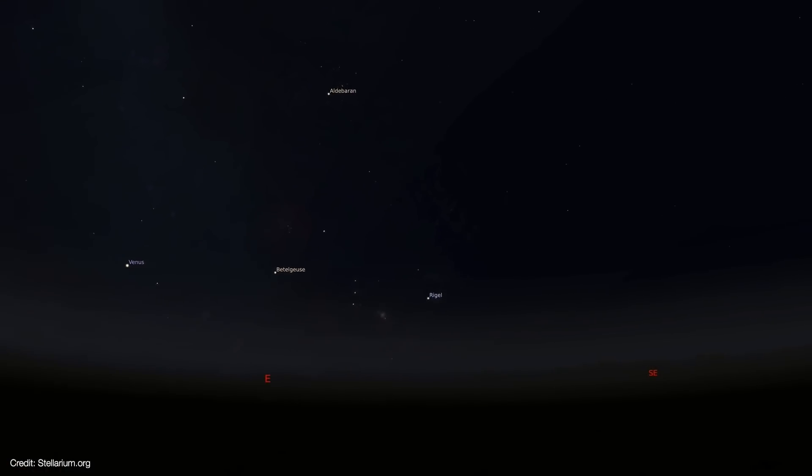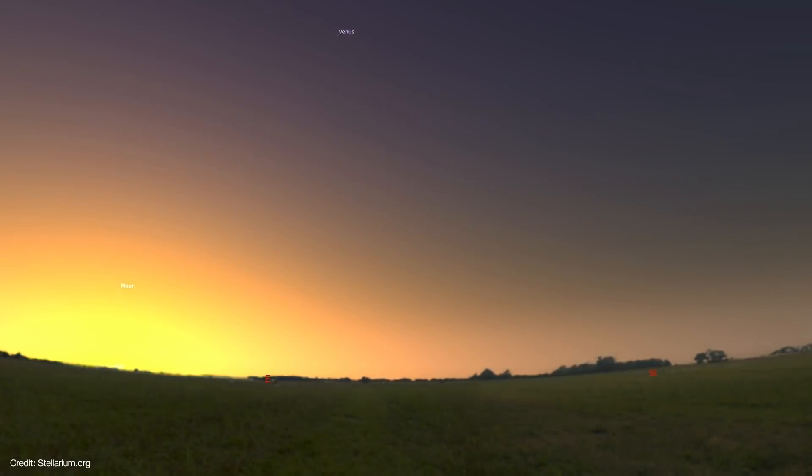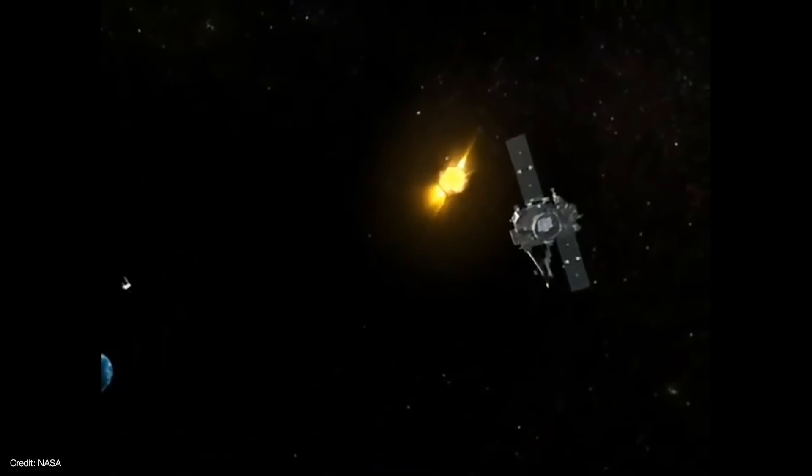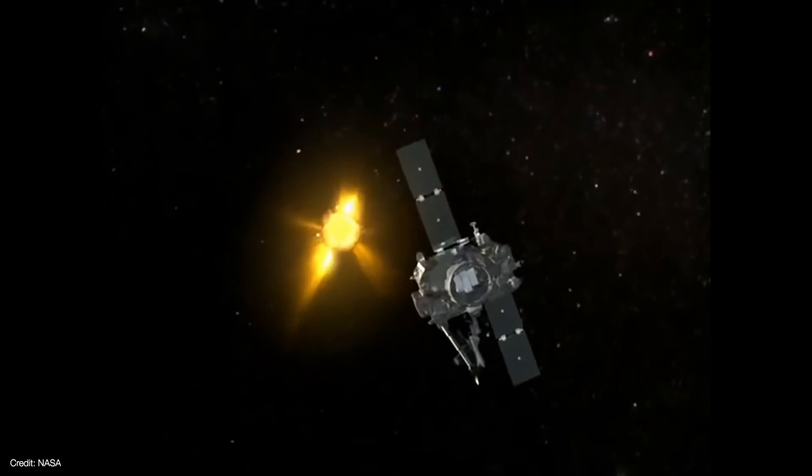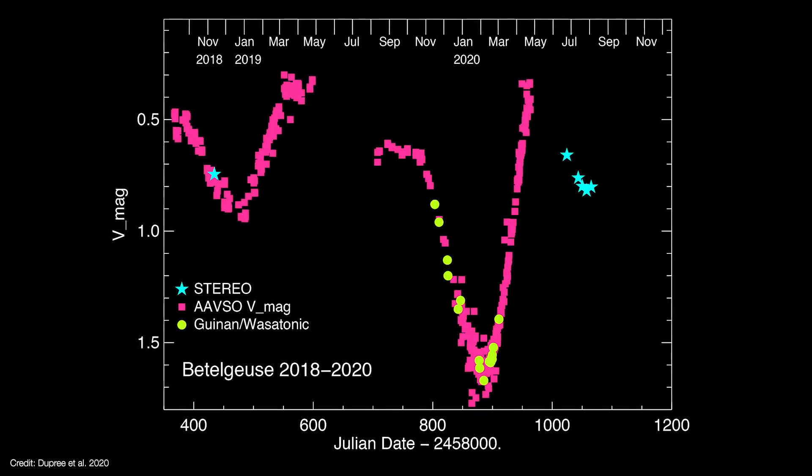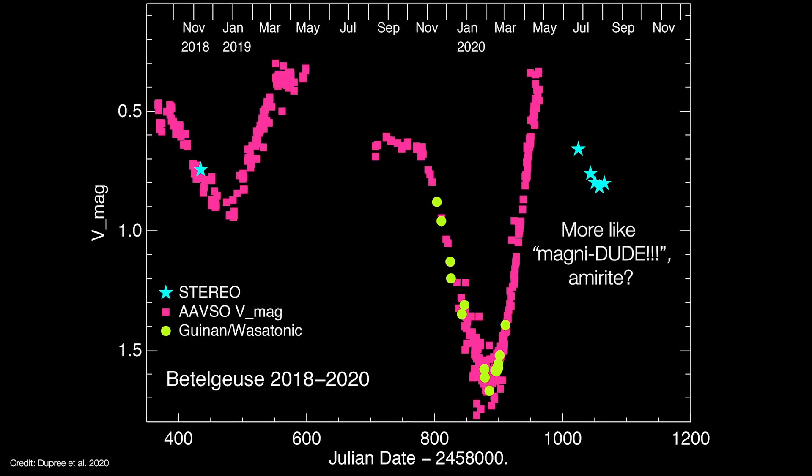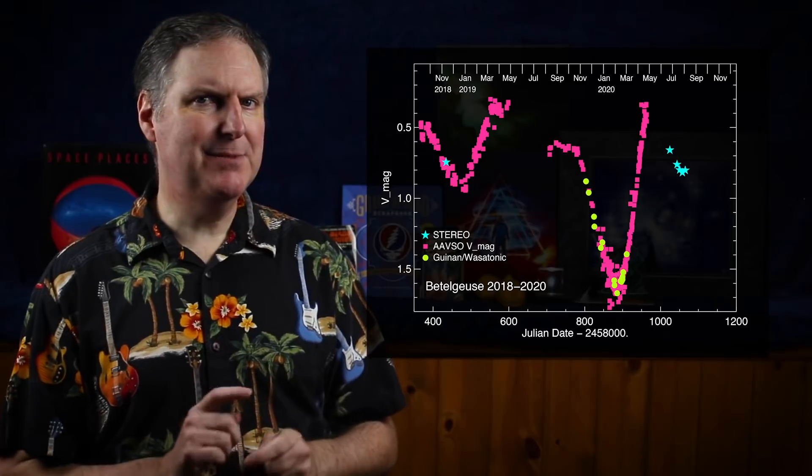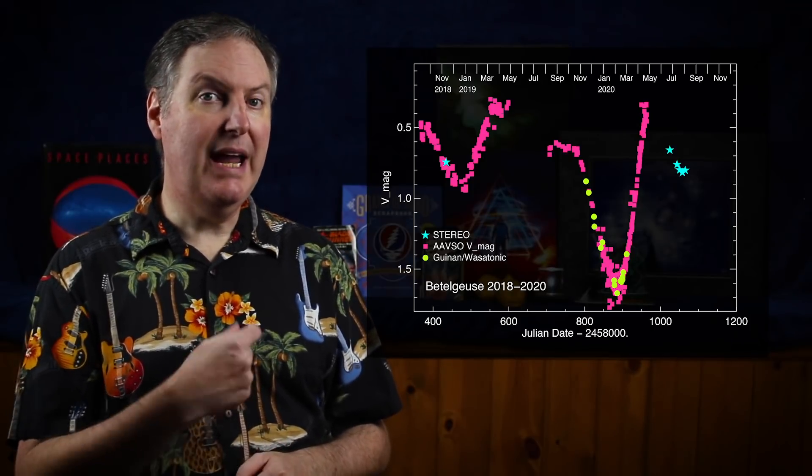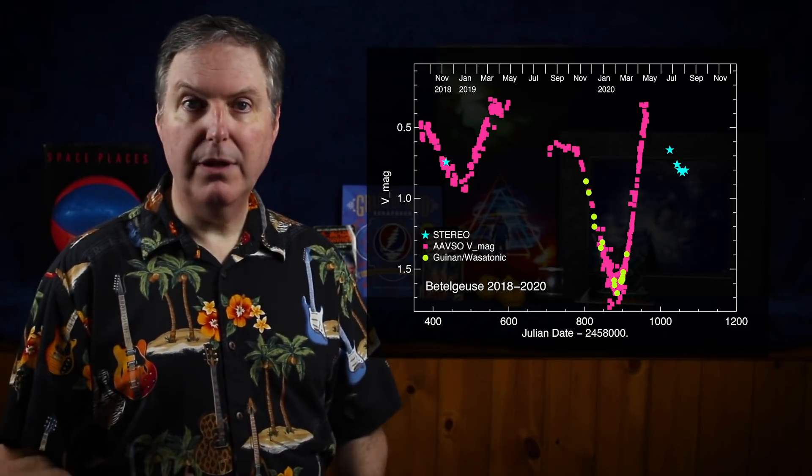Betelgeuse is hidden in the daytime sky during the summer months, so typically we'd have to wait until August when it starts to rise just before dawn. But in the aftermath of the Great Dimming, waiting three to four months to observe Betelgeuse again wasn't an option this time. So Dupree used the Stereo Solar Observatory to glimpse Betelgeuse in the summer of 2020. Sure enough, it faded once again before leveling off at about 0.8 magnitude. That's interesting, because Betelgeuse's 420 day cycle isn't expected to reach its next minimum until April 2021. If this marks the beginning of a new dimming event, we may be in for another show this winter.